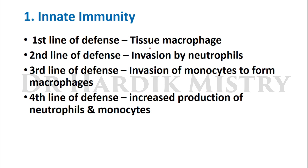The first line of defense consists of tissue macrophages. The second line of defense involves invasion by neutrophils. The third line involves invasion of monocytes to form macrophages. The fourth line of defense increases the production of neutrophils and monocytes. Once the body detects foreign materials, these four lines of defense mechanisms will start.